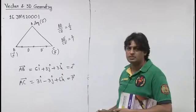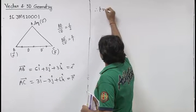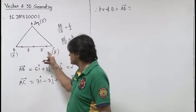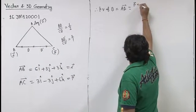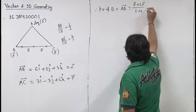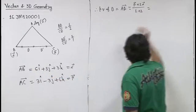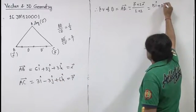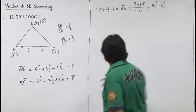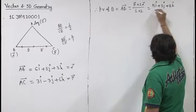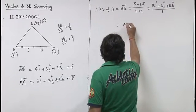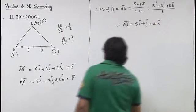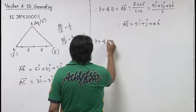Now using section formula, position vector of D, that is AD vector, we have 1 is to 2 here, so that is 1 into beta plus 2 into alpha upon 1 plus 2. This is 12i cap plus 3j cap and 12k cap upon 3. So AD vector will be 5i cap plus 1j cap plus 4k cap.